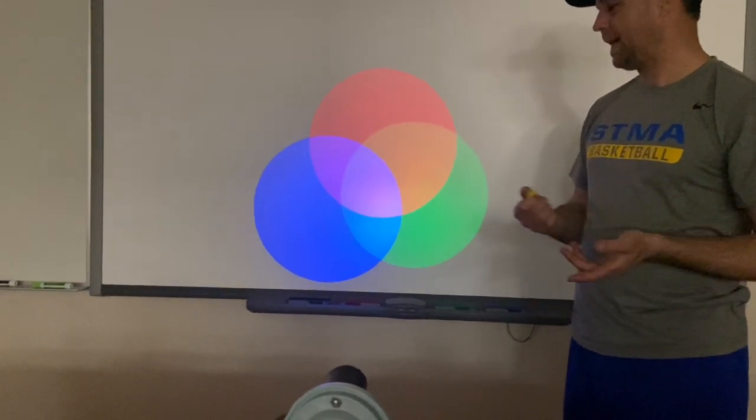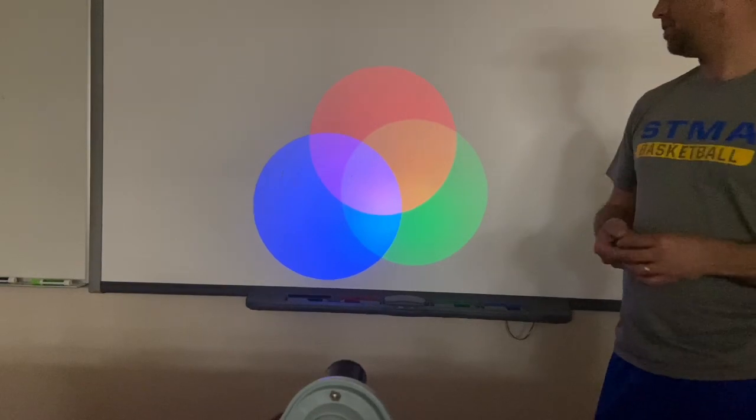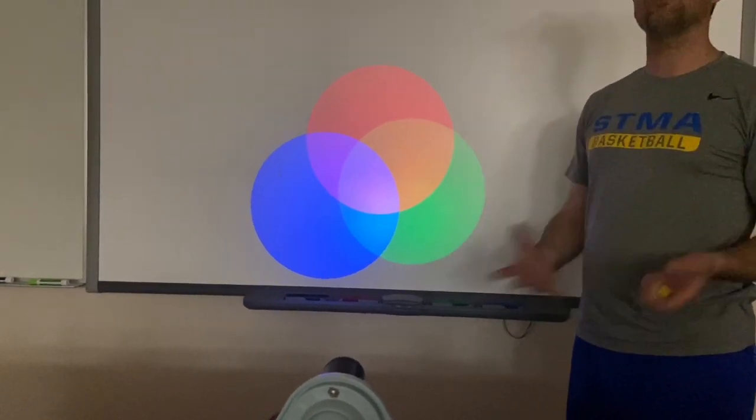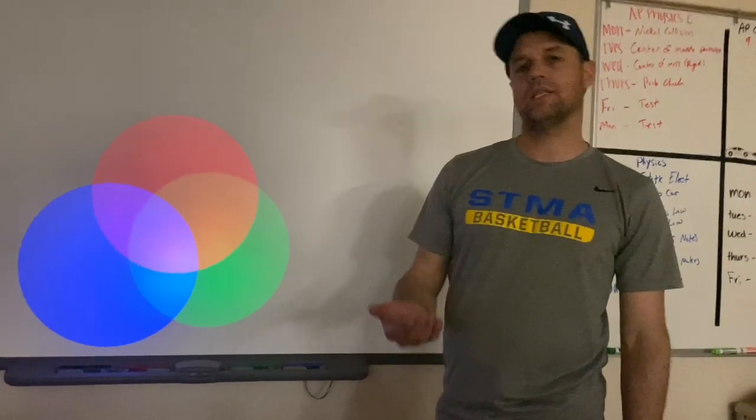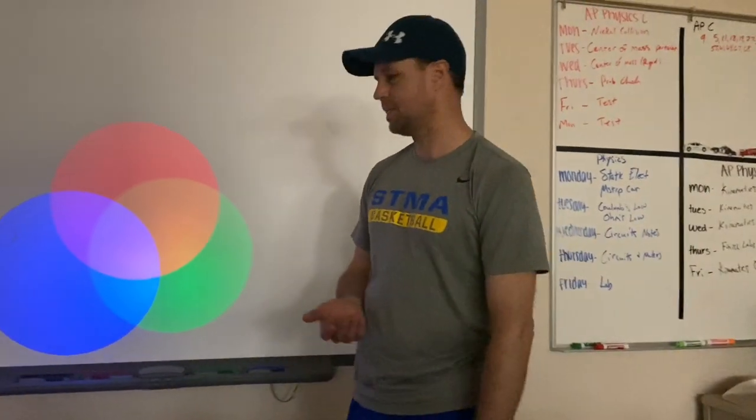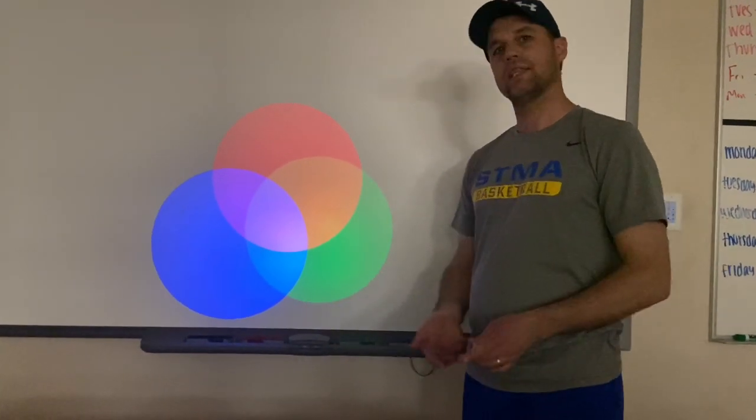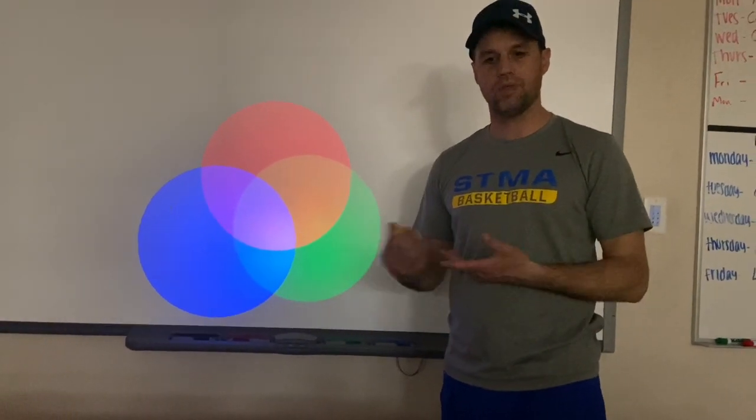So there's lots of different ways to make white light. These are what we call the additive primary colors of light because as you mix more and more light, the more you mix, the whiter it gets. Pigments, not so. Like if you've been mixing a lot of paint, you notice that it doesn't get whiter the more you mix. It usually turns brown or maybe even black. That's because the more pigments you have, the more they absorb.